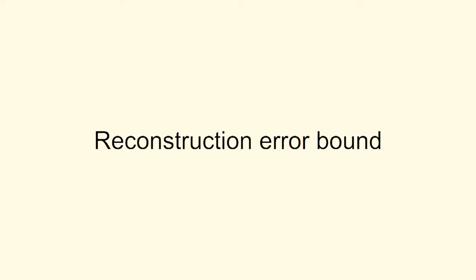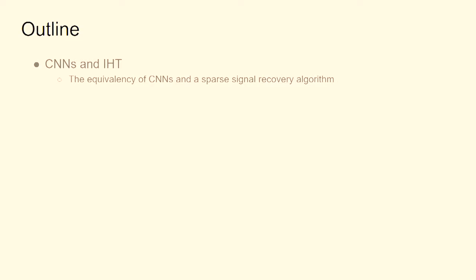Let's look at the reconstruction error bound. We dig up a signal recovery algorithm known as iterative hard thresholding (IHT). Then we think like a mathematician: what is the CNN doing in terms of linear algebra and pseudocode? If you put the two next to one another, you'll see that going from one layer to the next in the CNN to reconstruct from hidden units is exactly one iteration of iterative hard thresholding, with the filters that happen to be at that particular layer.